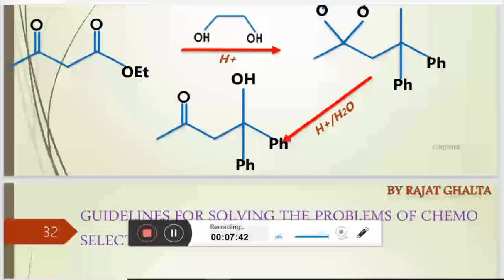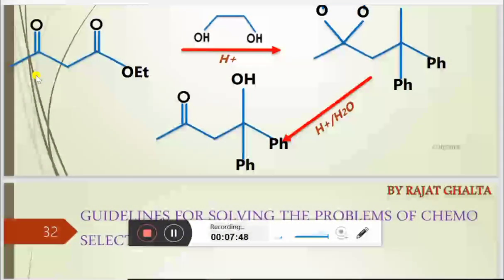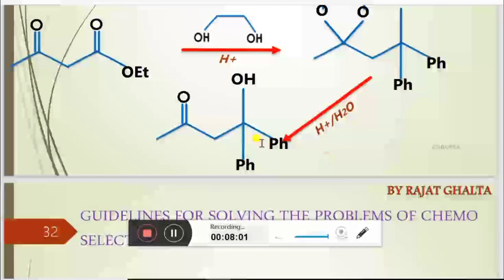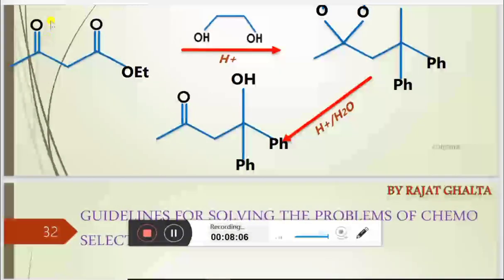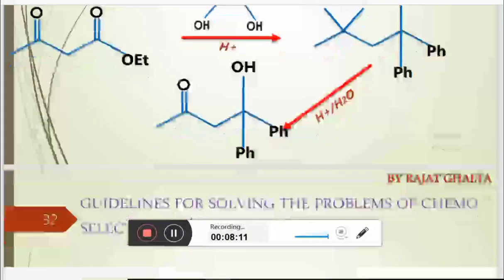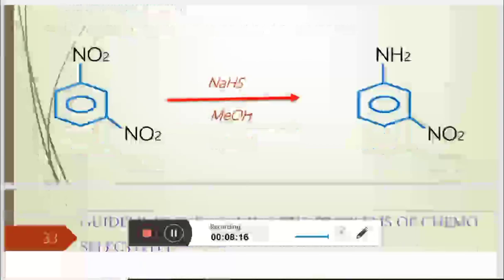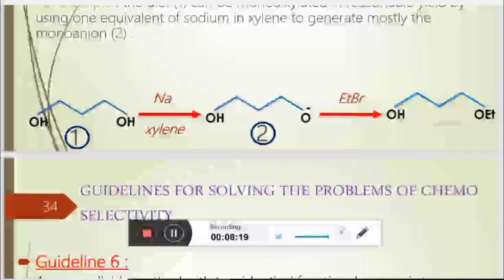Similarly, when you mask a functional group completely, there is no possibility for the incoming nucleophile to attack the other site. The chemo-selectivity has reached 100%, and there is only one possibility — attack on a single functional group. We then say the reaction is becoming chemo-specific.